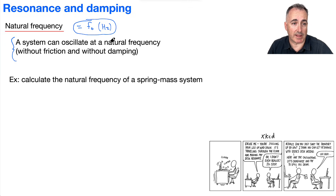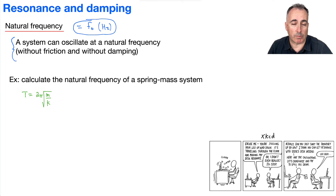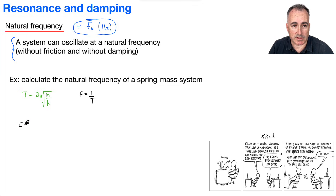Here could be a question: calculate the natural frequency of a spring-mass system. How do I do that? Well, we have an equation for the period of a spring-mass system. It goes 2π times the square root of m over k. If that's the case, then how do we find the natural frequency? Remember that frequency is 1 over the period, and this is the period.